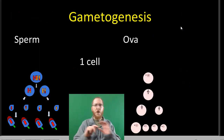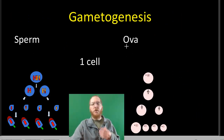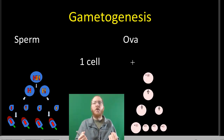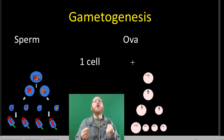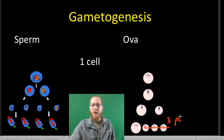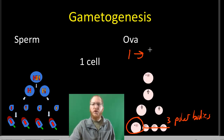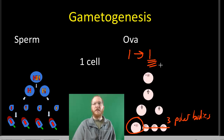In gametogenesis, females are about quality. They must provide an egg — the ovum — that has all the cytoplasm, organelles, and everything needed. So instead of making four eggs, they produce three polar bodies, which are just reingested by the body and not used, and one good ovum. So we go from one cell to one functional cell because the focus is on making it a really good cell.